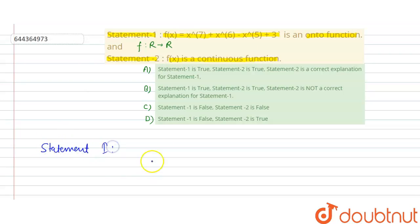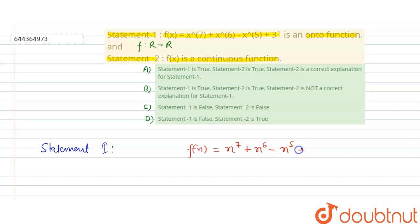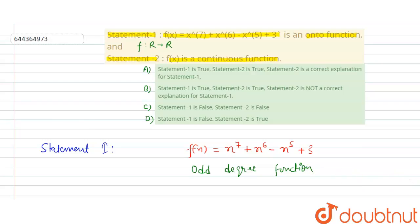In Statement 1, f(x) is given as x⁷ + x⁶ - x⁵ + 3. We can observe that this is an odd degree function, since the highest power is 7, which is odd.